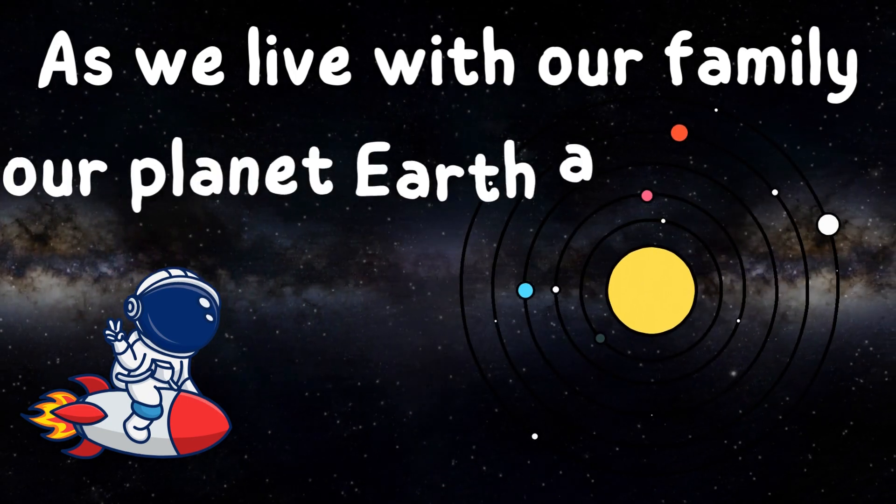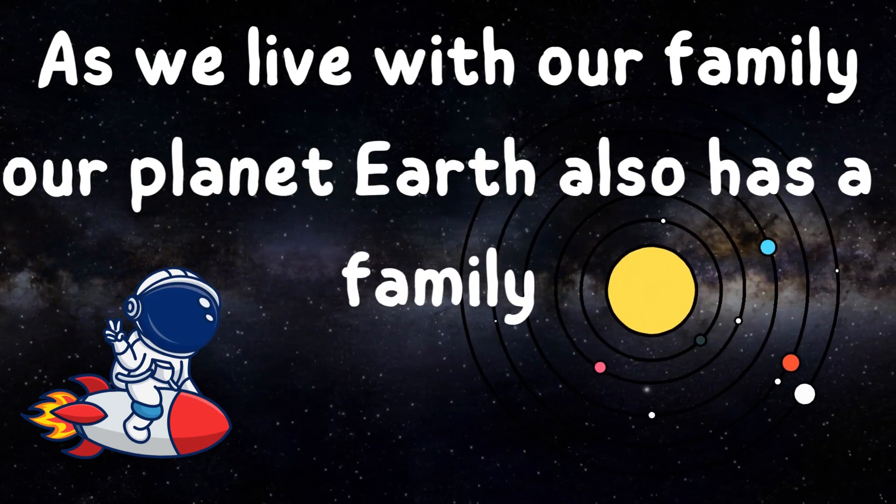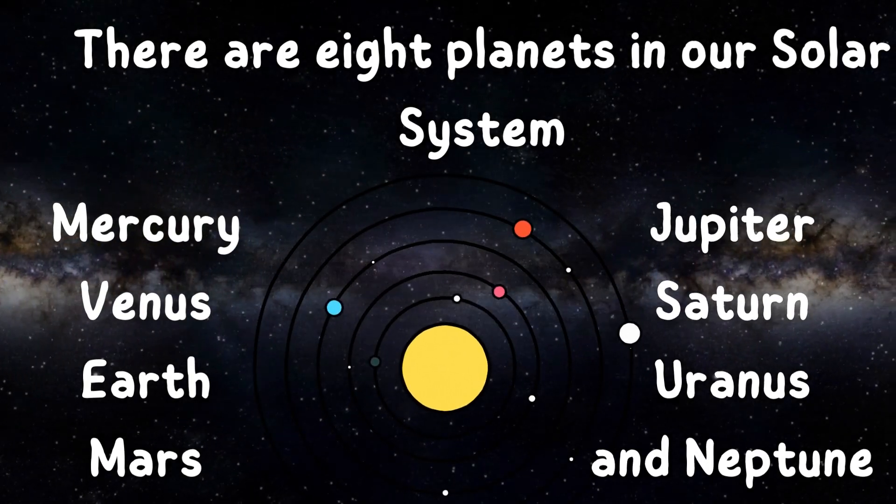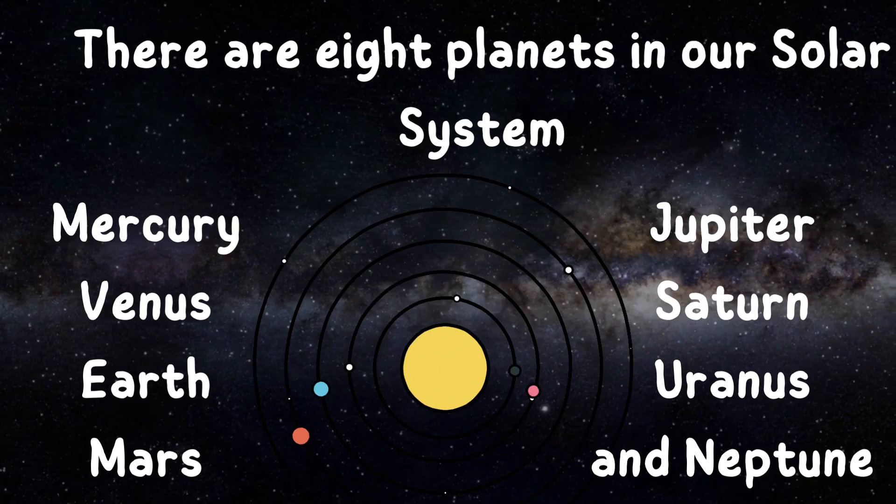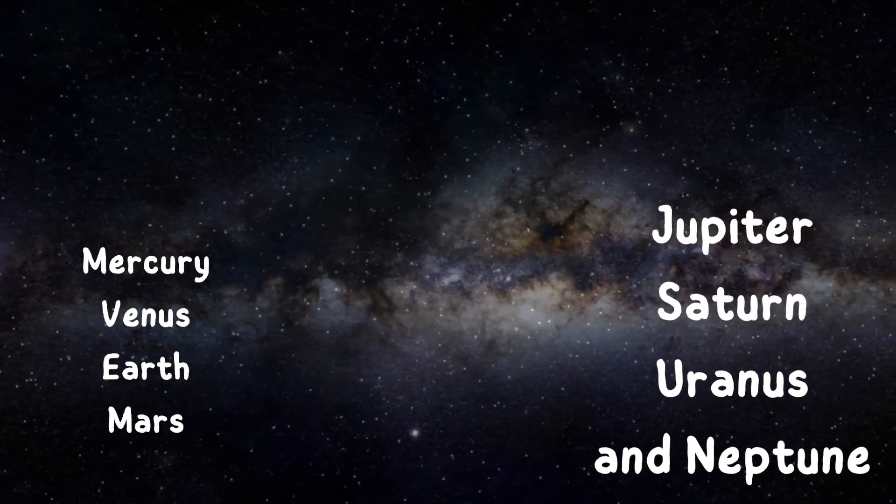As we live with our family, our planet Earth also has a family. There are eight planets in our solar system: Mercury, Venus, Earth, Mars, Jupiter, Saturn, Uranus, and Neptune.